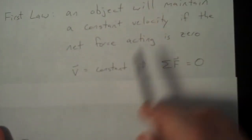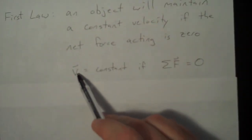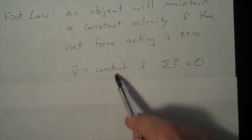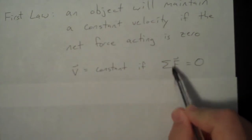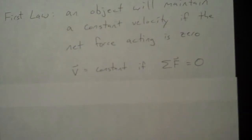If you want to write it more mathematically, you can say the velocity vector is a constant if the sum, that's what this is, a summation sign, if the sum of the forces add up to zero.